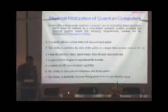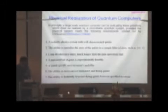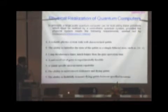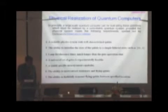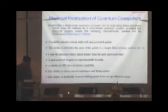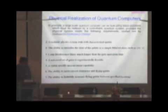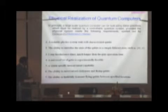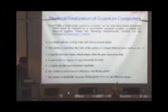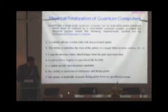Next we come to the physical realization of a quantum computer, specifically the DiVincenzo criteria. In principle, a large-scale quantum computer can be built using primitives realized by a controllable quantum system, provided the physical system meets the following requirements spelled out by DiVincenzo at IBM Research Labs. First, a scalable physical system with well-characterized qubits. Second, the ability to initialize the state of the qubits to a simple fiducial state. Third, long decoherence times much longer than the gate operation time. Fourth, a universal set of gates that is experimentally feasible. Fifth, qubit-specific measurement capability. Sixth, the ability to inter-convert stationary and flying qubits. And seventh, the ability to faithfully transmit flying qubits between specified locations.